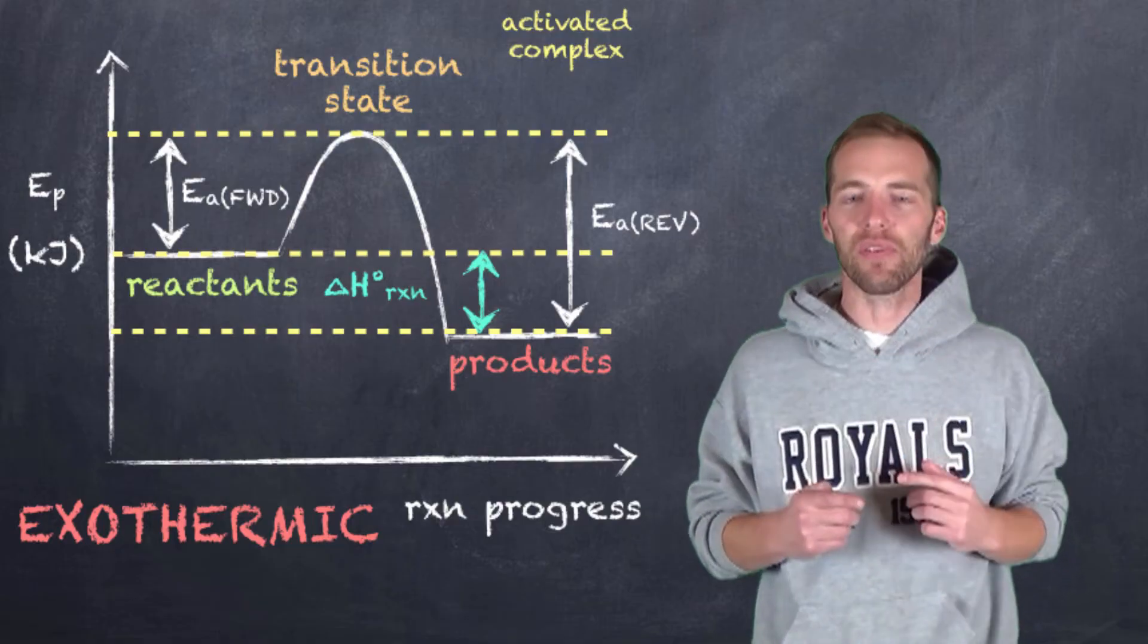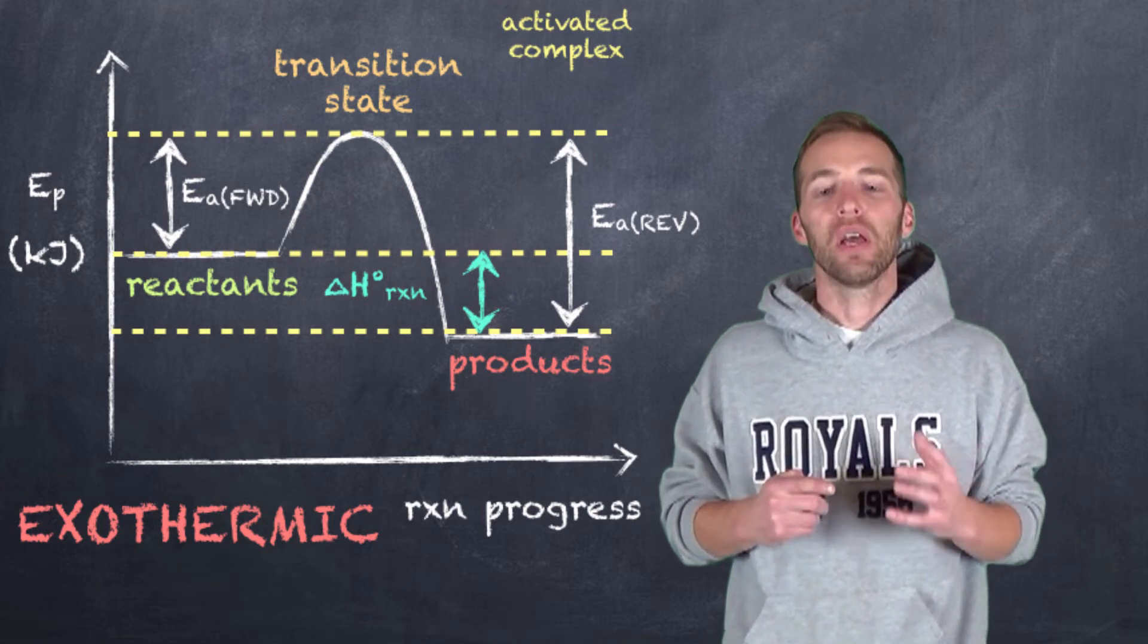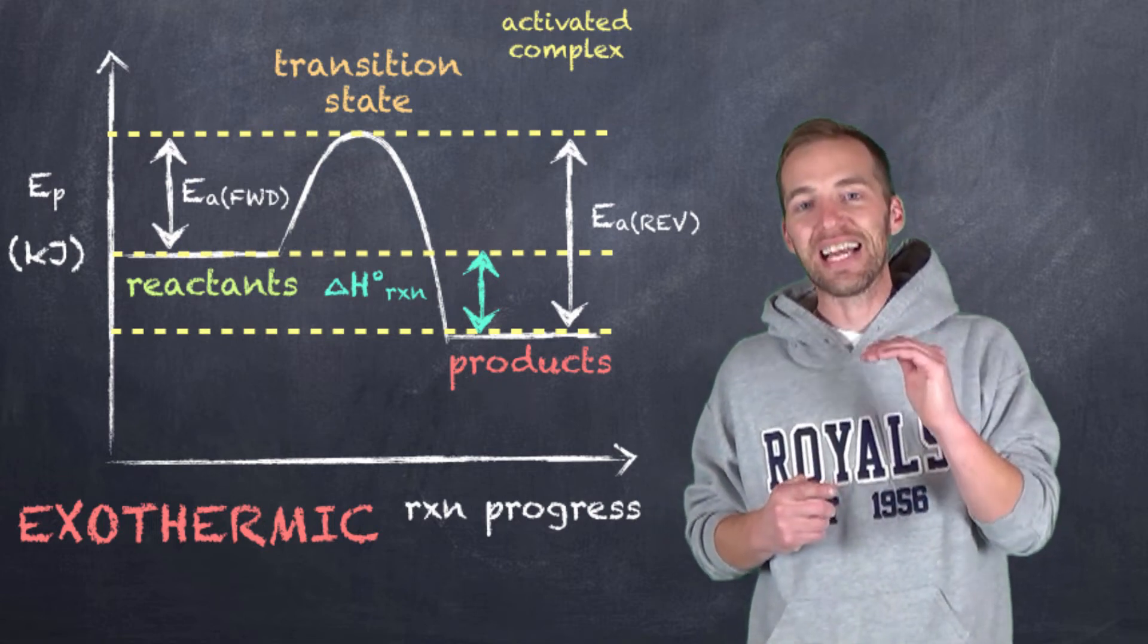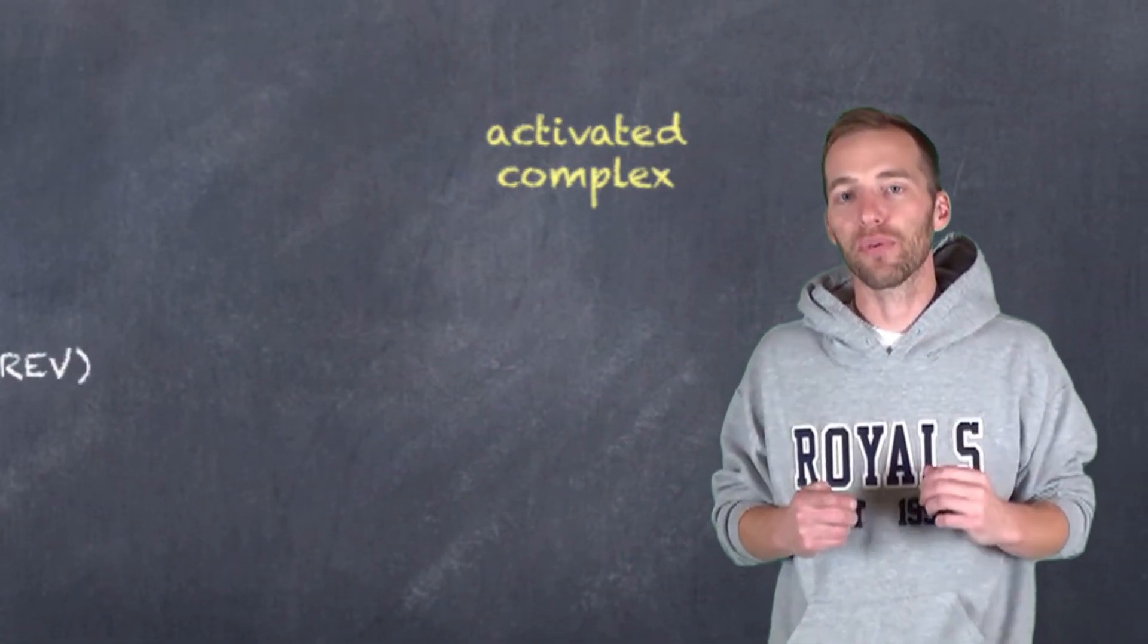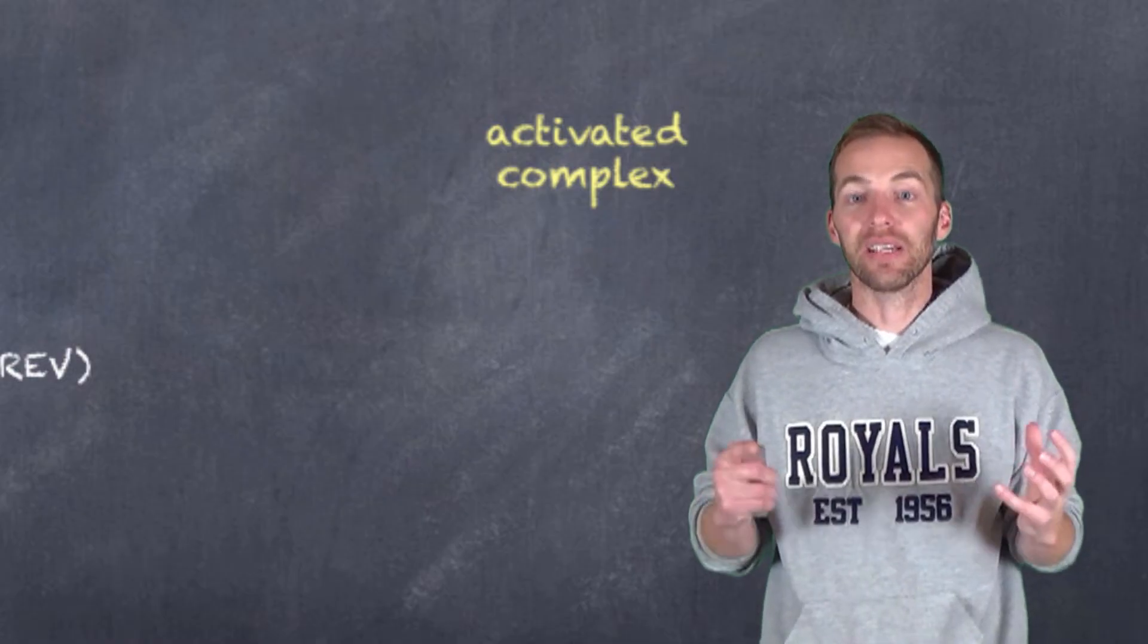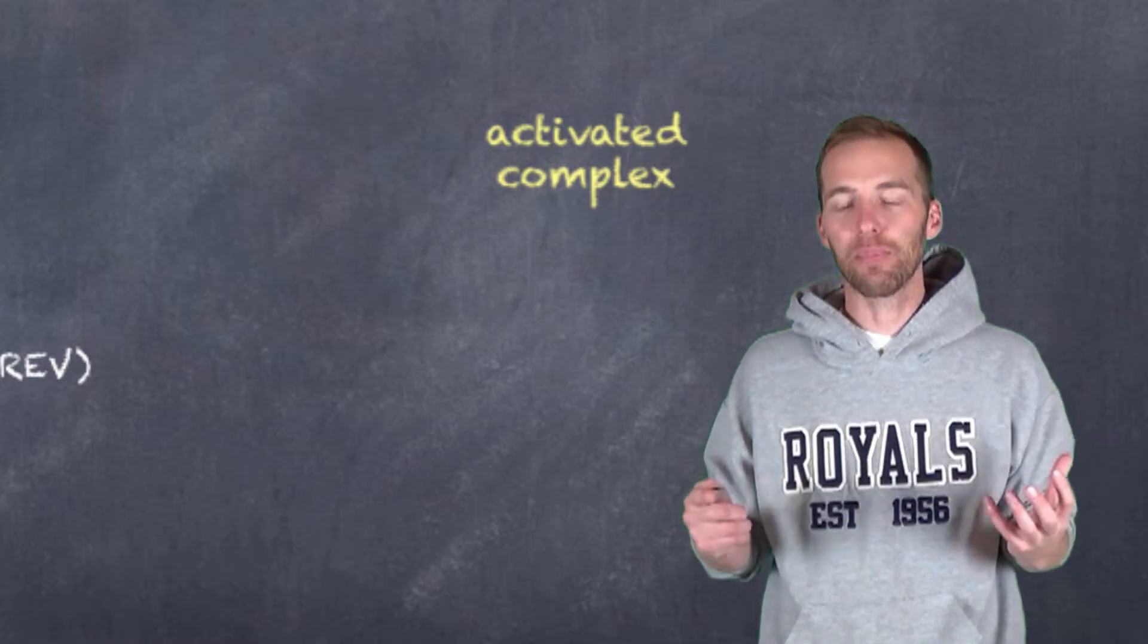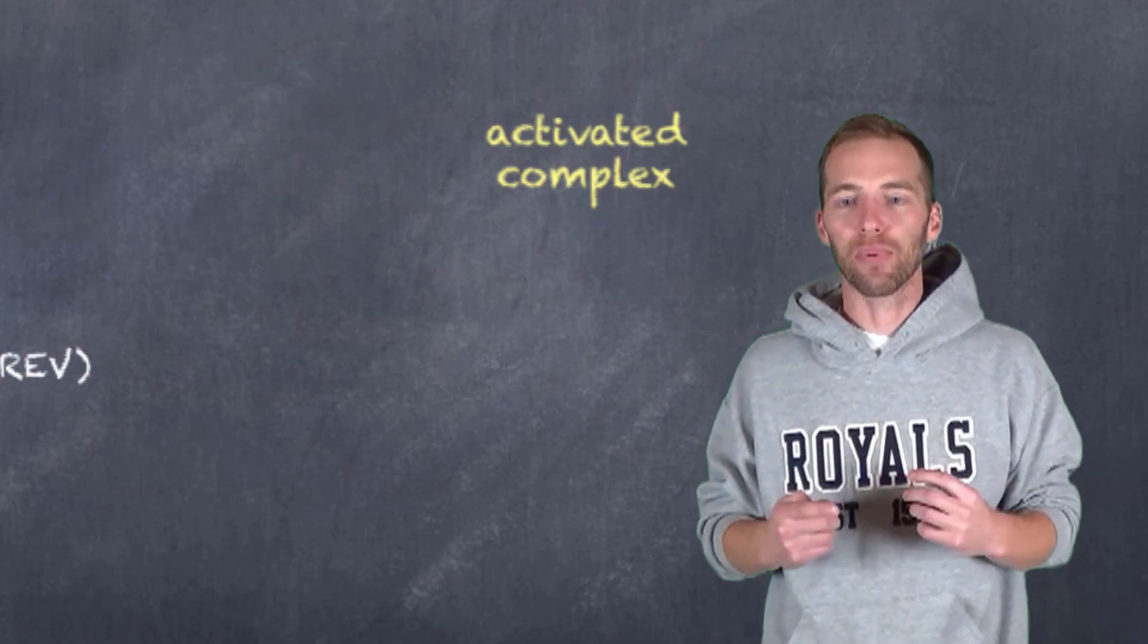Now, what about this transition state, and more specifically, this activated complex? Well, let's take a closer look at that. The transition state is a highly unstable state. Now, at this transition state, there's something we refer to as an activated complex. And this activated complex is, again, a highly unstable intermediary, or in between, a reactant and a product.